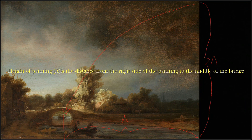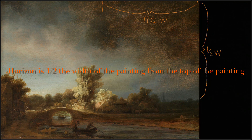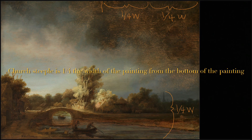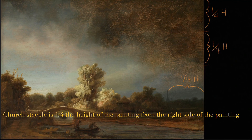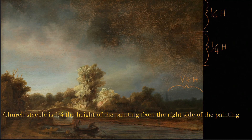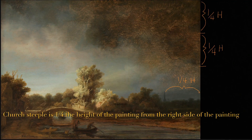The horizon line is actually half the width of the painting from the top. So if you take the painting, divide the width in half, that's how far the horizon is from the top. There's a little church steeple on the right — if we take that width and divide it again to a quarter of the width, that's how far the steeple is from the bottom. Then he'll take the height of the painting, divide that in half and half again, so a quarter of the height equals the interval from the steeple to the right side of the painting.